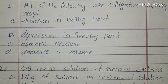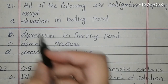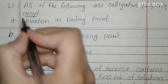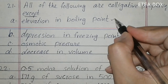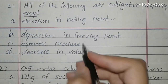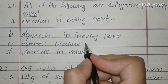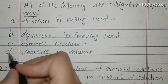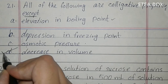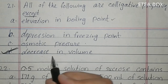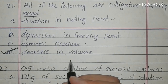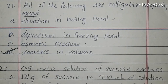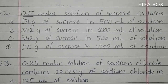MCQ 20: all of the following are colligative properties except — options A, B, and C are all colligative properties. Option D (decrease in volume) is the exception — it is not a colligative property. So here option D is correct.